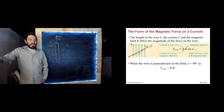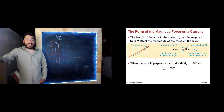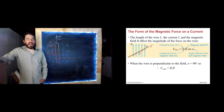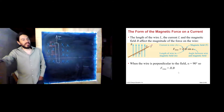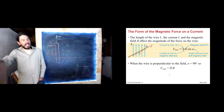This equation gives us the magnitude. This is the current in the wire, the length of the wire that is in the magnetic field, the magnetic field's strength in Tesla, and this is the angle between the field and the current. For a lot of cases, we will have wires perpendicular to fields, in which case our equation simplifies and ends up looking like F = ILB.